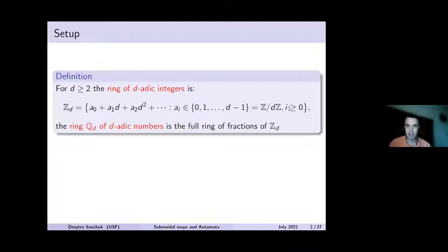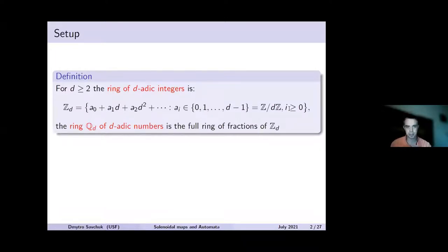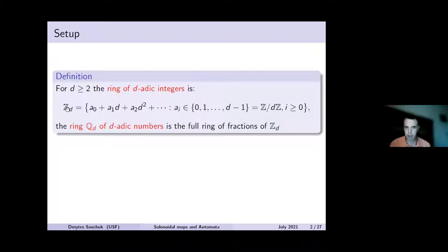Let me start from some very basic introductions. The object we are going to start with is the ring of d-adic integers. We define d-adic integers as formal power series a0 plus a1·d plus and so on, for fixed integer d, not necessarily prime, where we add and multiply those series just like we multiply ordinary integers, namely with a carryover. We define the ring of d-adic numbers as the full ring of fractions of this ring of d-adic integers.